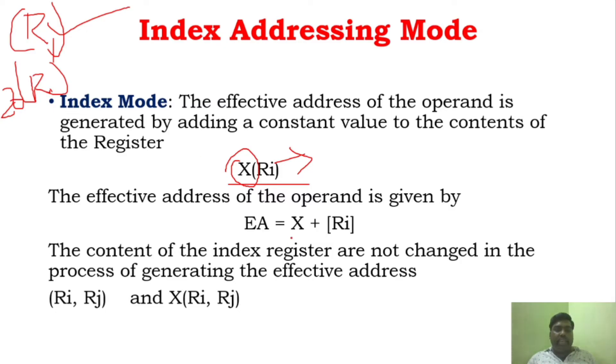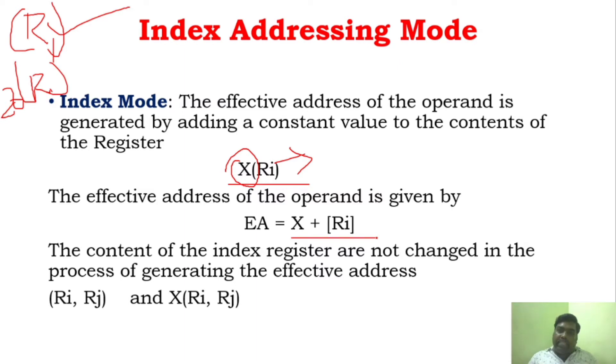You can see here: the effective address is X plus RI. And similarly, the index register value will not be changed when finding the effective address.